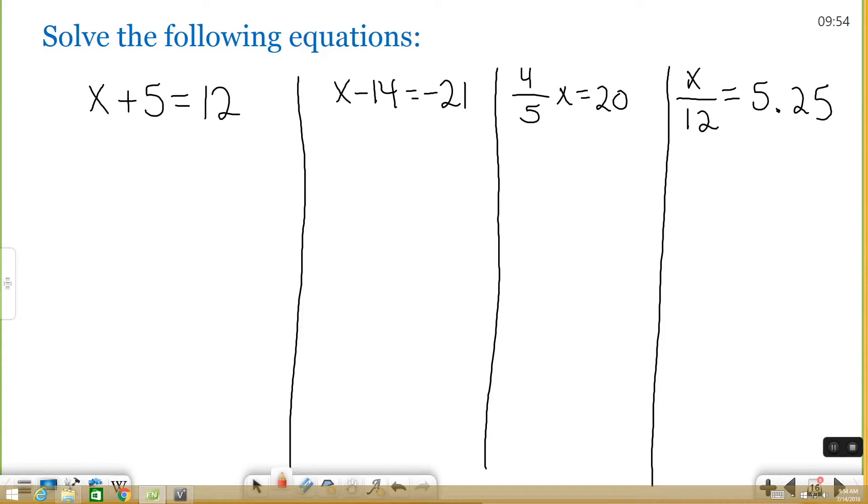So these are four different types of equations that are called one-step equations. They're the four different types that you can have, and I'm going to go through each of them to show you how you can solve them. One of the key things when you're solving equations is you need to get your variable by itself. And to do that, you always look at the opposite of what's happening to your variable.